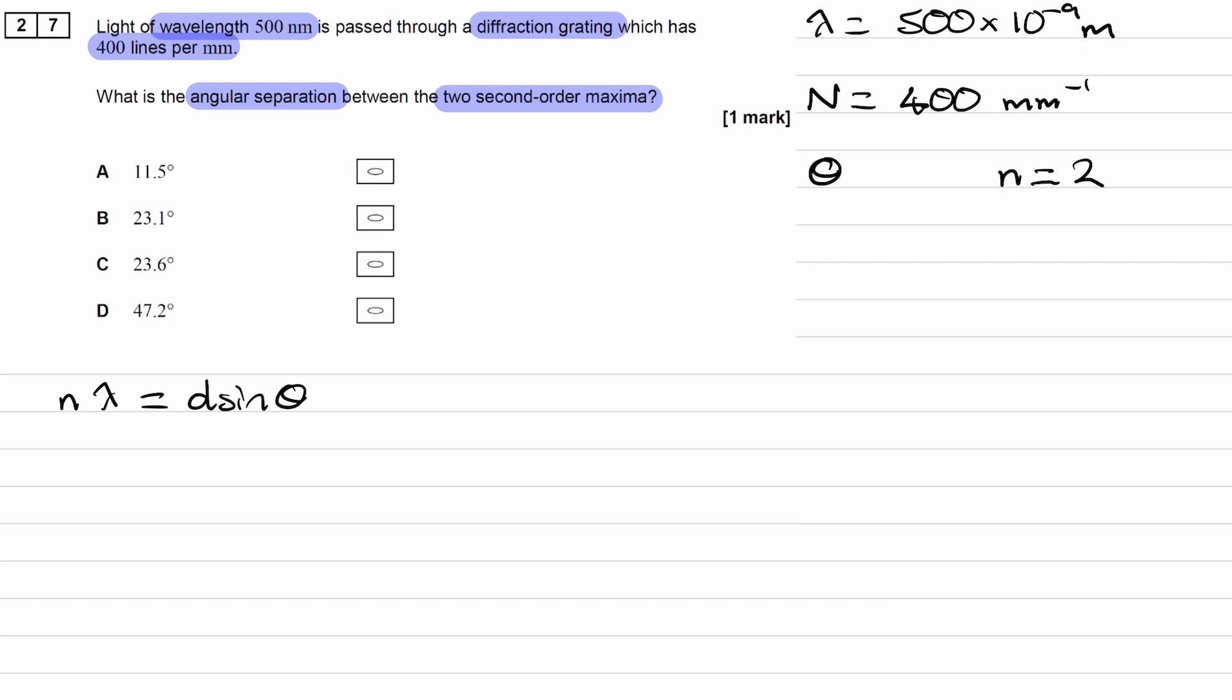Now, it wouldn't just be a case of working out what theta is, because theta would give you the angle between the second order maxima and the zeroth order maximum, the perpendicular to the grating. But we want the angle between the two second order maxima, which is different.